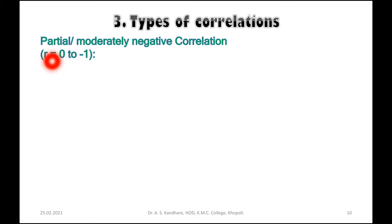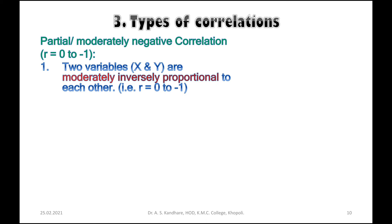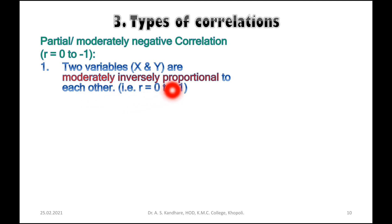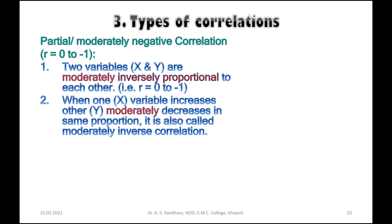Partial or moderately negative correlation is represented as r is equal to 0 to minus 1. The two variables x and y are moderately inversely proportional to each other. When one x variable increases, the other y variable moderately decreases in the same proportion. This is called moderately inverse correlation.